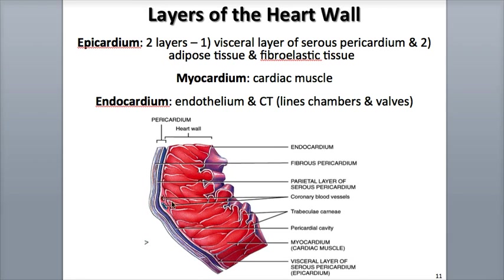The visceral layer consists of a thin, transparent layer of mesothelium, which is simple squamous epithelium. There are varying amounts of adipose tissue underneath, usually more in older adults, with most of it located around the right and left ventricles where it surrounds the heart's coronary blood vessels.